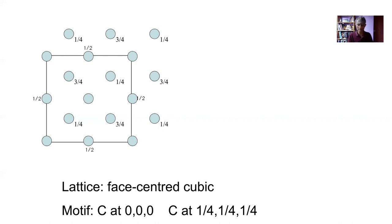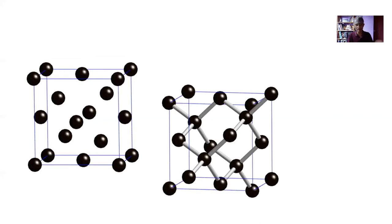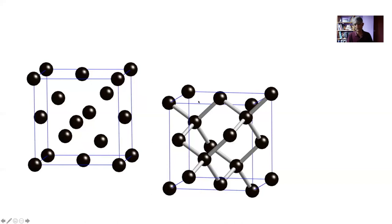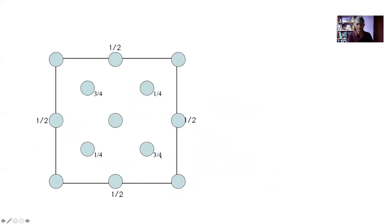Diamond is pure carbon but the atoms are arranged in a form which gives it the bonding and hardness we associate with diamond. In three dimensions each carbon atom is tetrahedrally bonded to every other carbon atom. These bonds are incredibly strong and that's why there's almost no capacity for plastic deformation in this system.